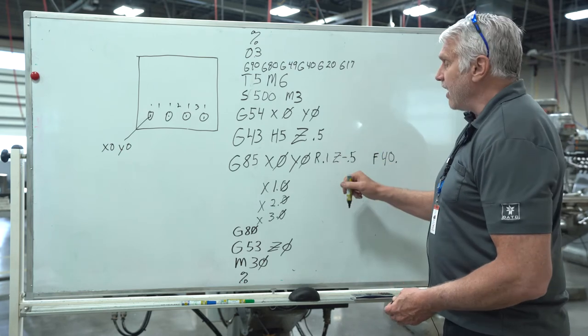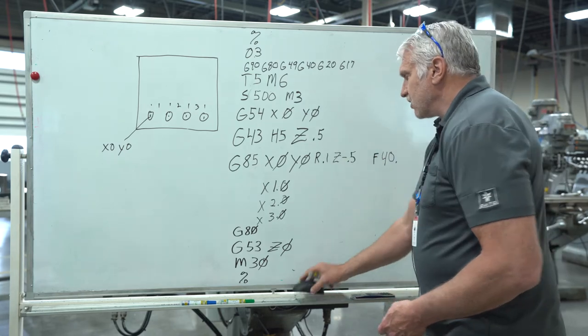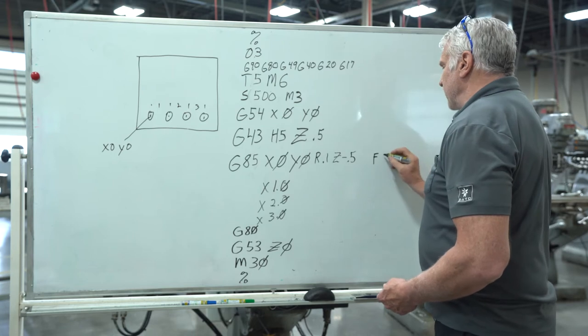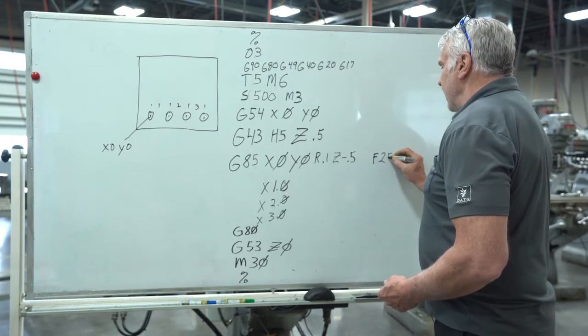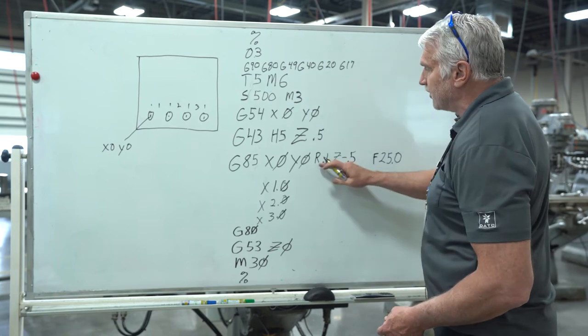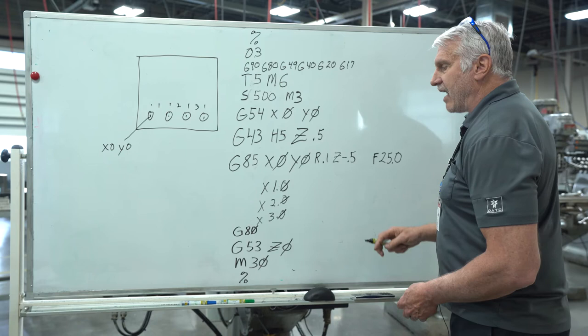Instead of rapidly, it will retract at the same feed rate that we fed down. So let's say we're going to feed down at 25 inches a minute. So it feeds down at 25, retracts back up 25, and when it gets to the R-plane at 0.1, then it will retract all the way back home.